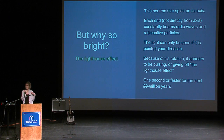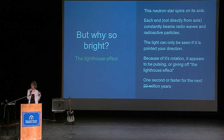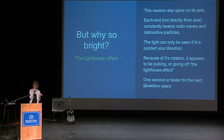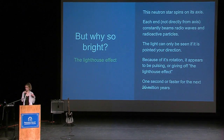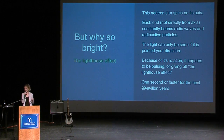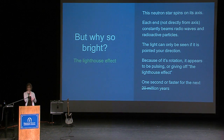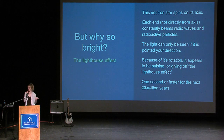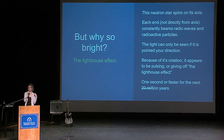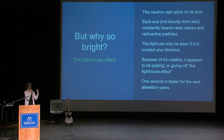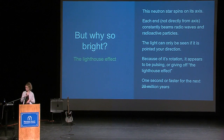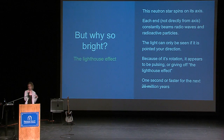But why so bright, and why the lighthouse effect? The neutron star spins on its axis, and out of each end — not directly from the axis — the neutron star constantly beams radio waves and radioactive particles. This light can only be seen if it's pointed towards your direction. So what Bell was picking up were the radio waves and radioactive particles that were rotating, shining a light that you can only see as it's passing. Because of its rotation, it appears to be pulsing — giving off the lighthouse effect.